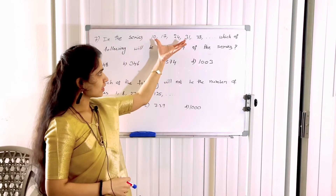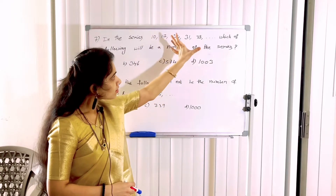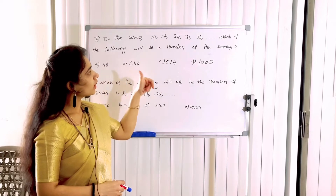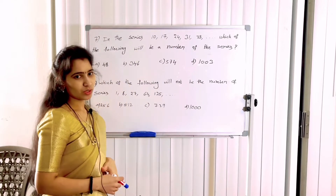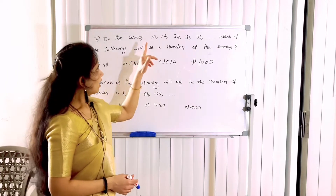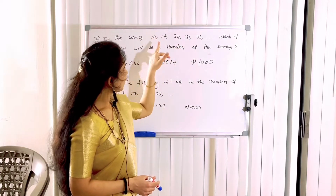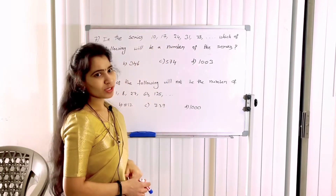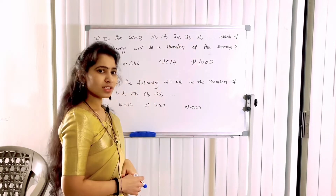Let's start with the series first: 10, 17, 24, 31, 38. The difference between 10 and 17 is 7. The difference between 17 and 24 is 7. The difference between 24 and 31 is 7.